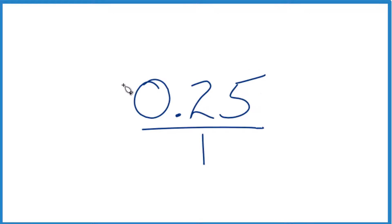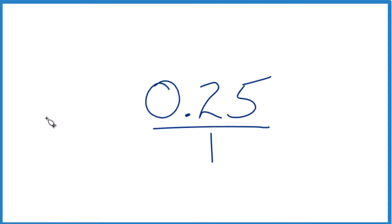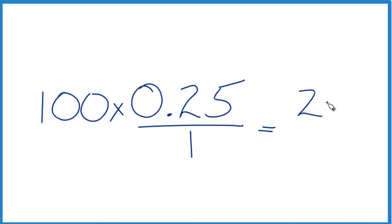Now what we could do, as long as we do it to the numerator and the denominator, we can change this to a whole number by multiplying. So if I multiply 10 times 0.25 that would be 2.5, but 100 times 0.25 that would give me 25 and that would be a whole number. Let's do that. 100 times 0.25 does equal 25 and that is a whole number.